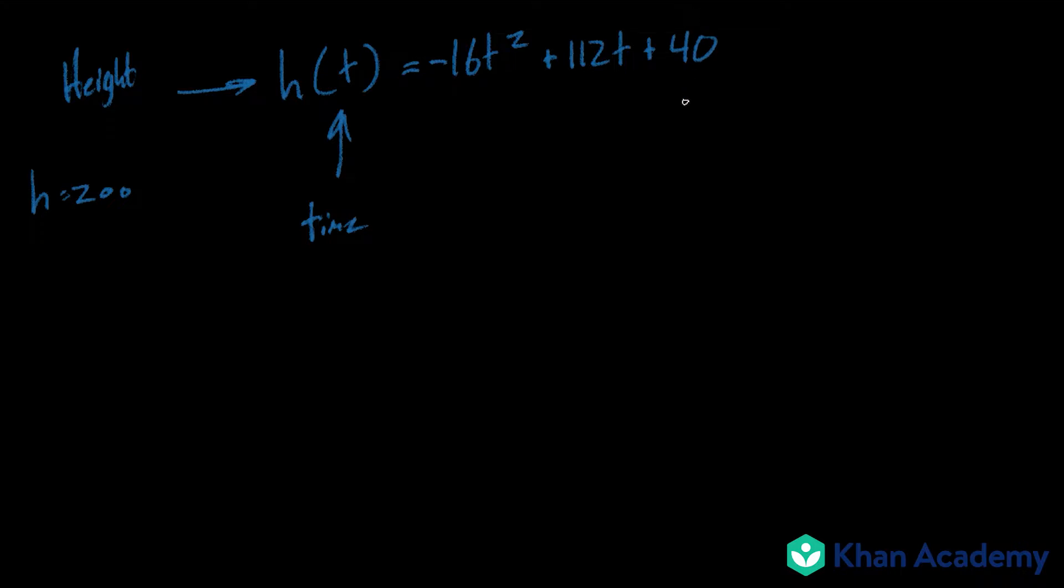And so basically what we're doing here is since h equals 200, we'll be plugging that in. So it will now look like 200 equals negative 16 t squared plus 112 t plus 40.